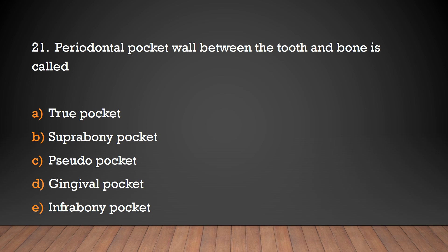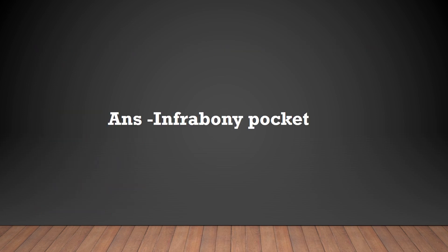Periodontal pocket wall between the tooth and bone is called: true pocket, suprabony pocket, pseudopocket, gingival pocket, or infrabony pocket? The answer is infrabony pocket. An infrabony pocket is a periodontal pocket in which the bottom is apical to the level of adjacent alveolar bone.